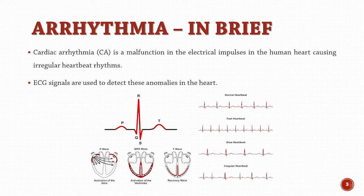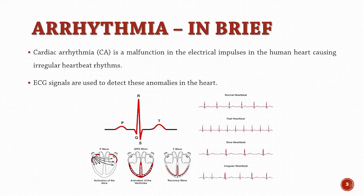Cardiac arrhythmia is a malfunction in the electrical impulses of the heart causing irregular heartbeat rhythms. It refers to a group of conditions that cause the heart to beat irregularly, too slowly or too quickly. There are several categories of arrhythmia including bradycardia or a slow heartbeat, tachycardia or a fast heartbeat, irregular heartbeat also known as a flutter or a fibrillation, and early heartbeat or a premature contraction.